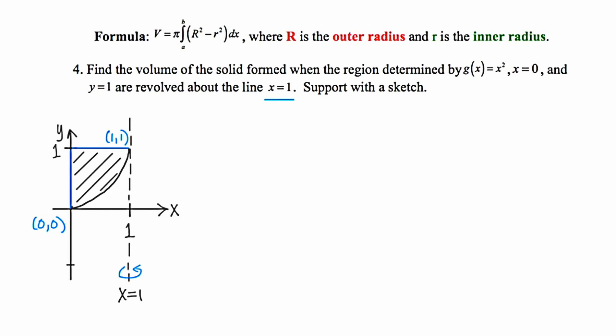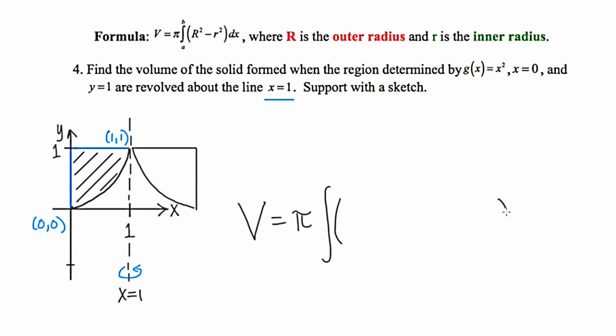In the end, we get something that looks like this — a cross section of the solid of revolution. We'll draw the whole thing in class, but this gives a sense of what's happening. Because the axis of revolution is vertical, this is going to be a dy problem. Setting up the volume formula: volume equals pi times the definite integral, leaving space for the radii expressions. The low y is 0 and the high y is 1.